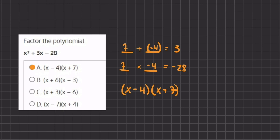If you want to verify that we have the right answer, you can always FOIL these factors and multiply them to make sure you get back to the original polynomial. So A is our final answer.